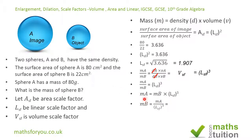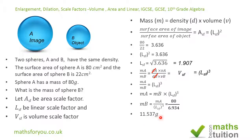So we have 80 divided by 6.934 — because the linear scale factor cubed equals 6.934 — which gives a value of 11.537 grams. To the nearest integer, that gives us 12 grams. Hope that all made sense — please subscribe, thank you for watching, bye!